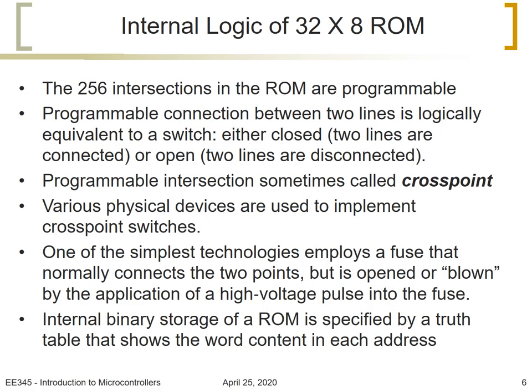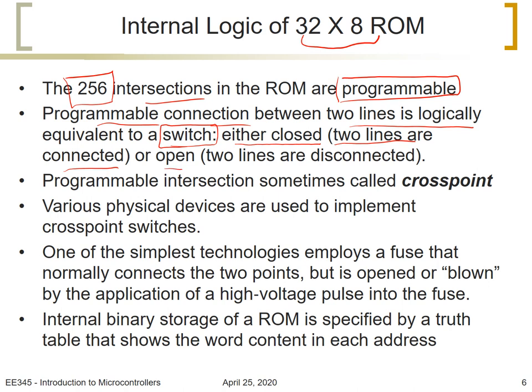Let us look at the internal logic of this ROM that we have just described, which is 32 by 8. The 256 interconnections in the ROM are programmable. So each crosspoint, each point is a programmable connection between two lines, is logically equivalent to a switch. This intersection would be either closed, which means two lines are connected, or the switch will be open, which means two lines are disconnected. A programmable intersection sometimes we call it a crosspoint.